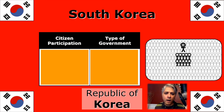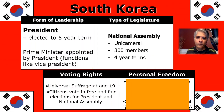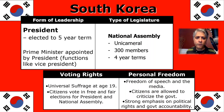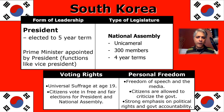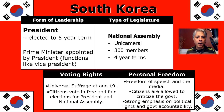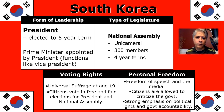Next up is South Korea. South Korea is democratic and has a presidential democracy. For form of leadership, they have a president elected to a five-year term. They also have someone with the title of prime minister, but in a presidential — not parliamentary — democracy, the prime minister is not the leader. In South Korea, the position of prime minister is sort of like a vice president. Their national assembly is unicameral — one house with 300 members elected to four-year terms. Universal suffrage starts at age 19 in South Korea, just slightly different from most. In recent decades, South Korea has an excellent track record of free and fair elections.